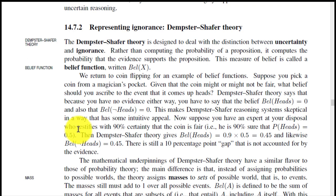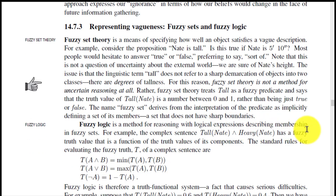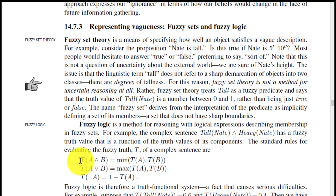Suppose an expert testifies with 90% certainty that the coin is fair — that is, 90% sure that P(heads) = 0.5. The next point is representing vagueness: fuzzy sets and fuzzy logic. Fuzzy set theory is a means of specifying how well an object satisfies a vague description. Fuzzy logic is a method for reasoning with logical expressions describing membership in a fuzzy set. For example, the complex sentence 'tall AND NOT heavy' has a fuzzy truth value that is a function of the truth values of its components, following standard rules for evaluating fuzzy truth. This was the end of this chapter on probabilistic reasoning, which was the last chapter of the syllabus.